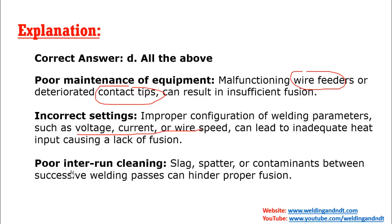And if there is poor internal cleaning — like spatters — if spatters are not cleaned, or if there are contaminants between successive welding passes, then lack of sidewall fusion can happen. Slag doesn't come in MIG welding because MIG welding filler wires are not coated with flux. So spatters or other contaminants may come on the welding run and must be cleaned. All these factors contribute to lack of fusion.